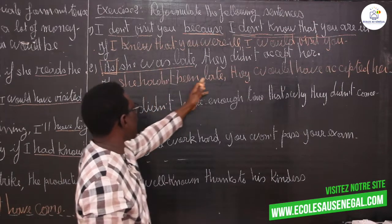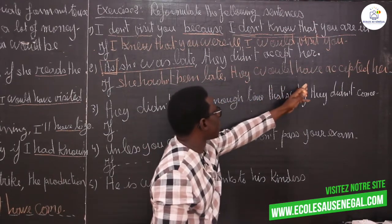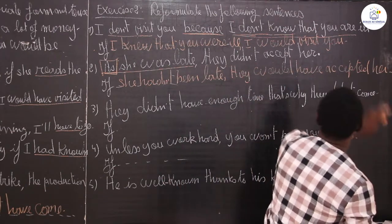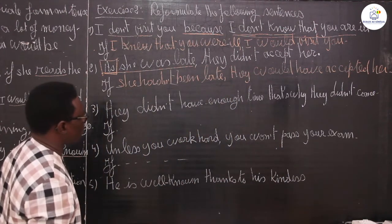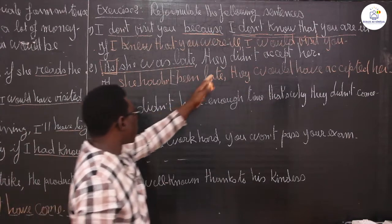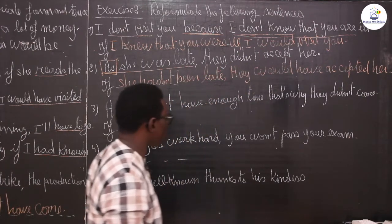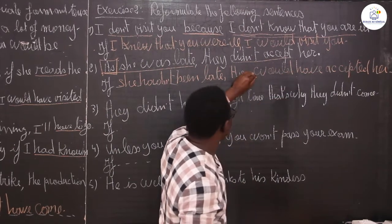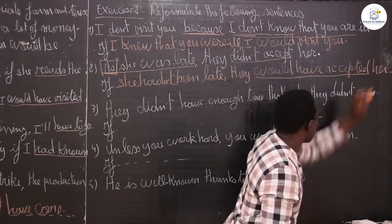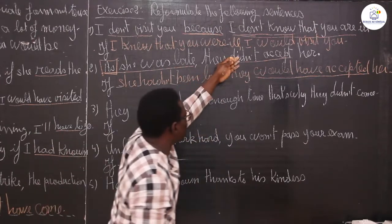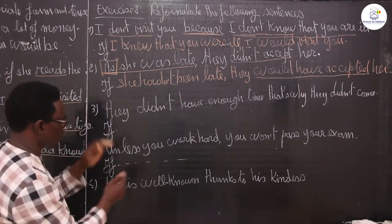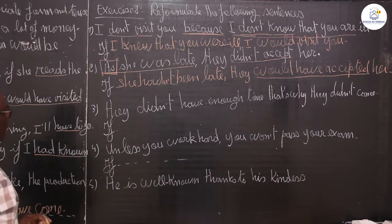So: 'If she hadn't been late, they would have accepted her.' Notice: 'didn't accept' becomes 'would have accepted' — the form changes. The initial clause was negative, 'they didn't accept her', and it becomes affirmative: 'they would have accepted her.' The if-clause 'she hadn't been late' is affirmative in structure but negative in form. Both the form and the position change.